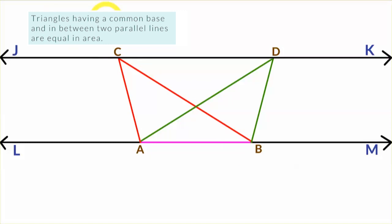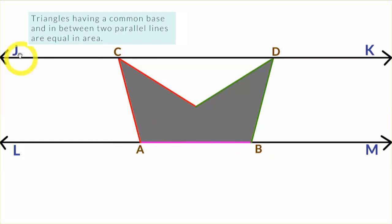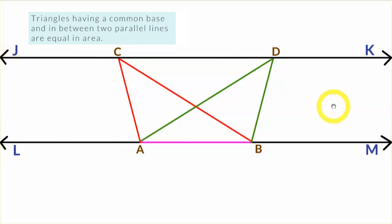So the theorem says triangles having a common base — or common side — and in between two parallel lines are equal in area. Triangle ABC and triangle ABD are stuck in between two parallel lines and have a common base AB, so they are equal in area. But we have to prove this, so let us try to do that.